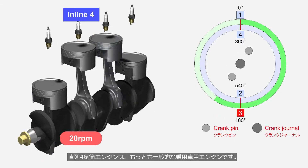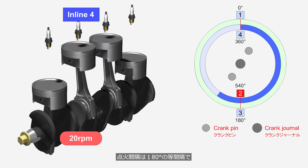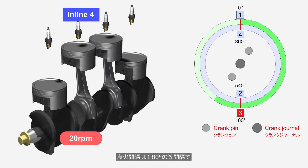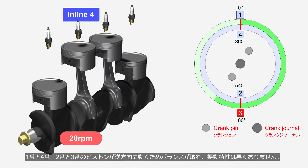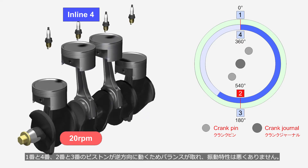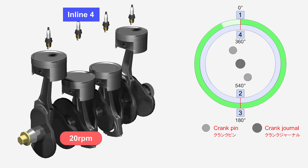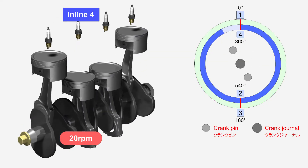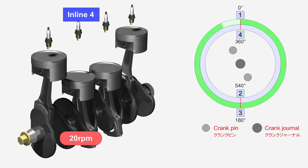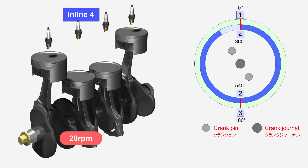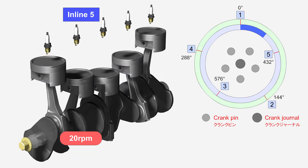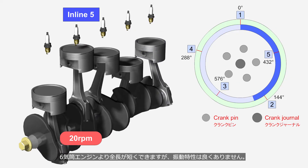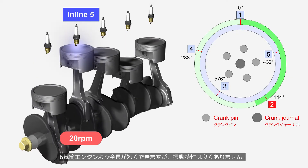Inline 4 engines are the most common engine used in passenger cars. The firing interval is evenly at 180 degrees, and because pistons 1 and 4, and pistons 2 and 3, move in opposite directions, balance is achieved, resulting in good vibration characteristics. Inline 5 engines are currently used only by Audi. The firing interval is evenly at 144 degrees, allowing for a shorter overall length compared to an inline 6 engine, but it does not have good vibration characteristics.